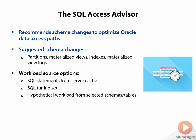Some examples of schema changes that the Access Advisor might give you are partitioning. Maybe for an especially large table, Oracle might recommend that you restructure the table and partition it across different data files. That obviously would have a nice effect on query performance and disk I/O.